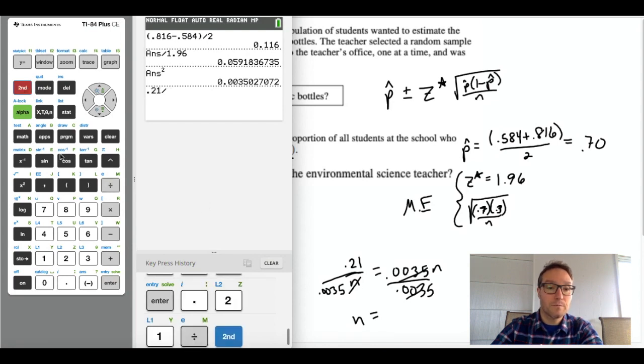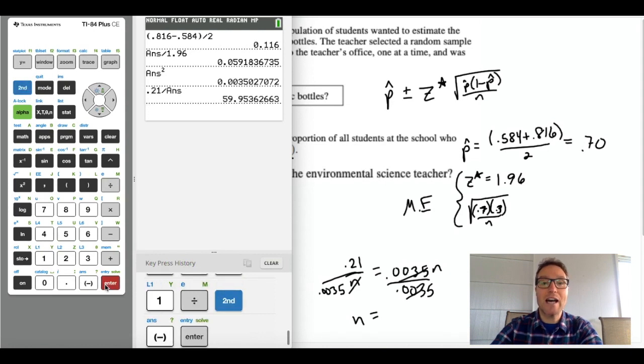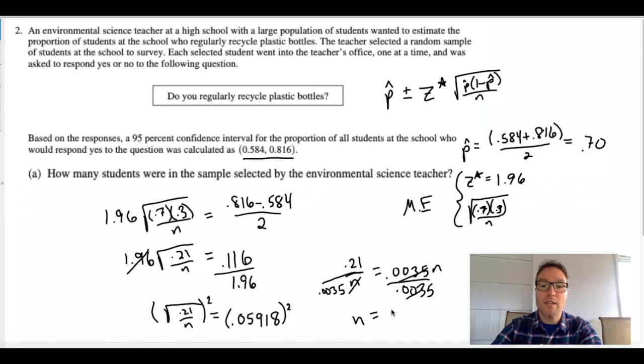So 0.21 divided by 0.0035 is going to give me my answer. So 0.21 divided by second answer so I don't have to sacrifice any digits of accuracy. 59.95, so 60 students was the sample size that was used here. We always round up when we're trying to calculate a sample size and that's my answer for part a. Students is the unit, by the way. Always put units if you know what the units are.